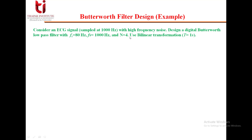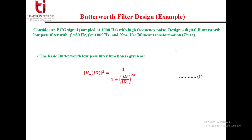Because we have to design a digital filter, we are using bilinear transformation assuming T equal to 1 second. We know the basic Butterworth low pass filter function is given by H_A, where A represents the analog filter, because we are not designing the digital filter directly. First we create its prototype — the analog low pass filter — and then convert that analog filter into the digital approximation. Equation number 4 gives the function for the analog filter design.